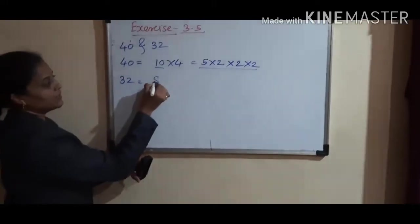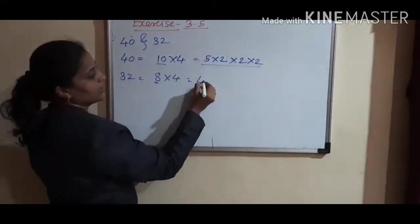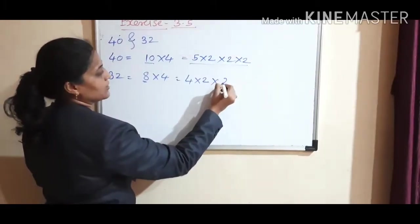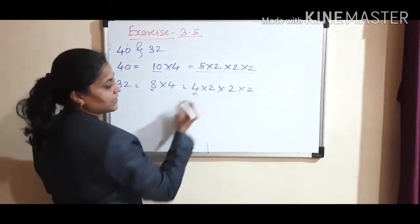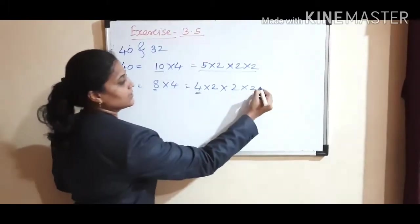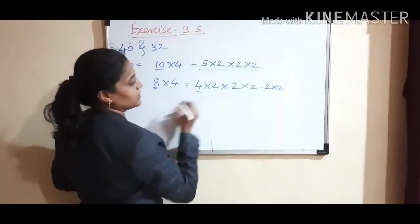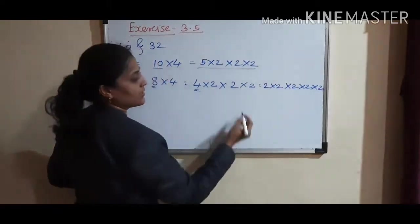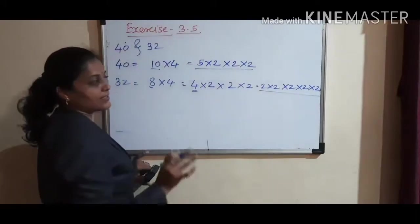32 equals 8 times 4. Now 8 will be 4 times 2, and 4 equals 2 times 2. But here again, 4 is remaining, which is not a prime number. We divide that 4 again: 2 times 2. These are the last steps.